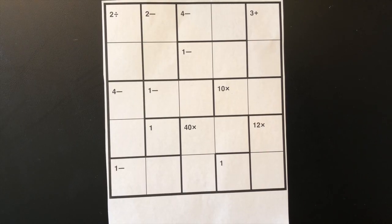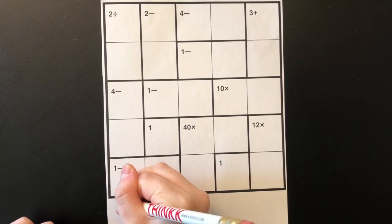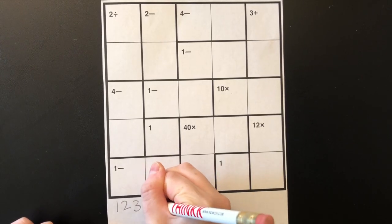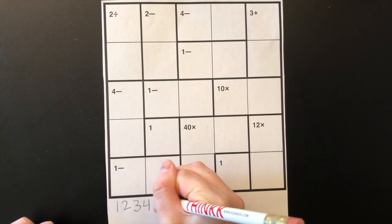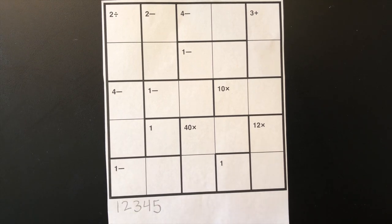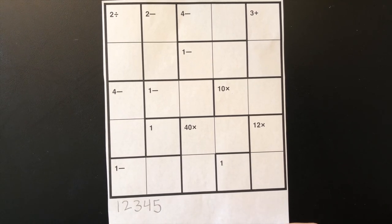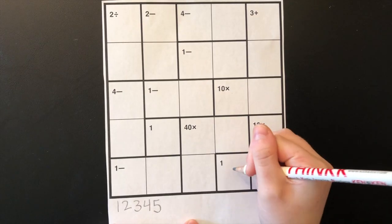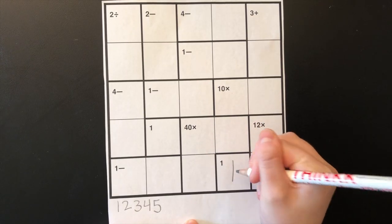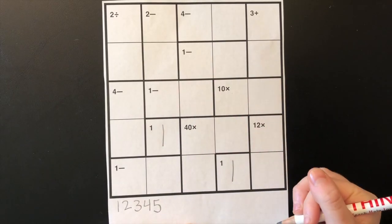These are the steps I take. Step one: write the numbers one through five at the bottom of the puzzle. This is an easy way for me to remember what numbers could go in each box. Step two: fill in any freebies. In this puzzle there are two freebies, this one and this one, so I'm just going to write them in.